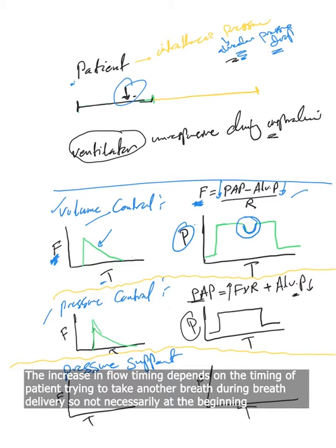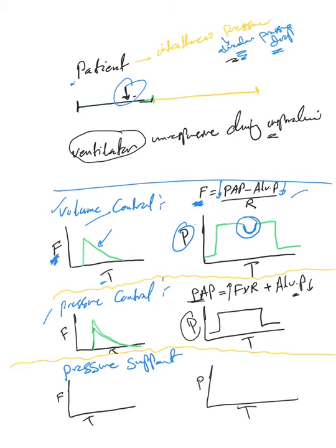The flow will go up to compensate for the drop in pressure, which means tidal volume will increase because the flow will increase.